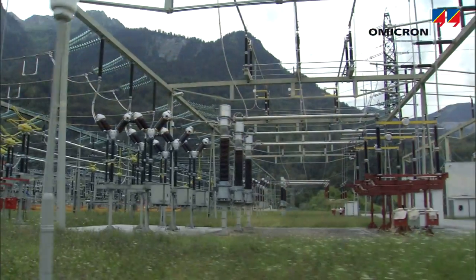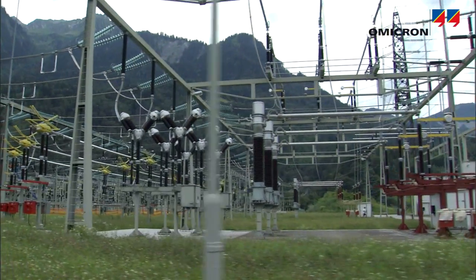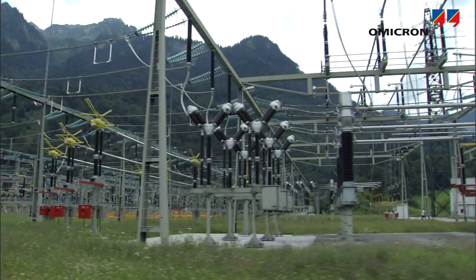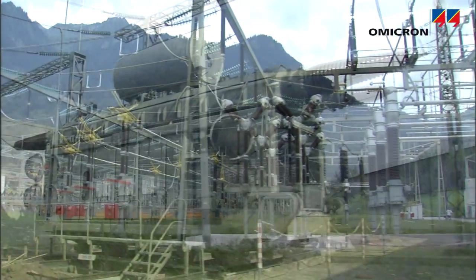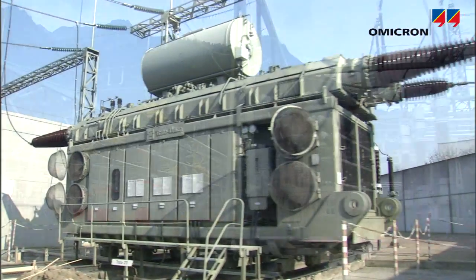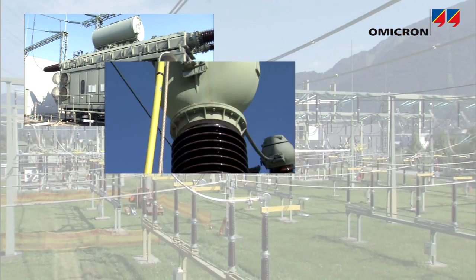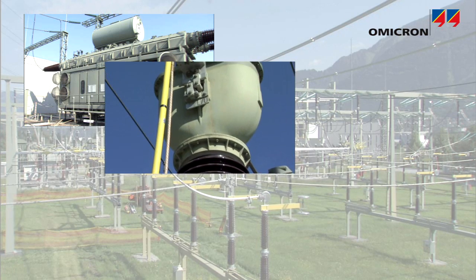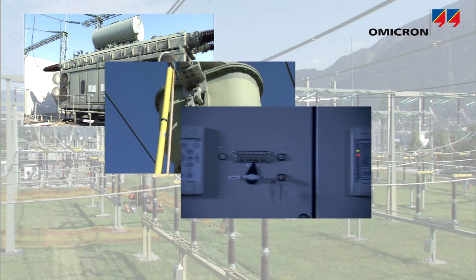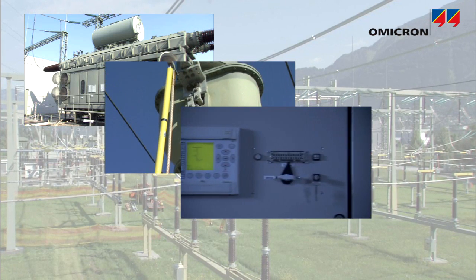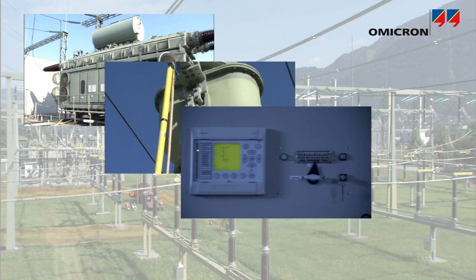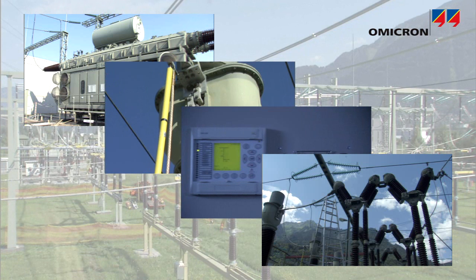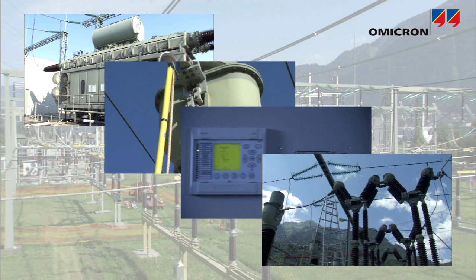Power plants and substations are the major components of the energy system. Aside from power transformers, the main parts of such a plant include instrument transformers, the protection and control system, as well as switching elements like circuit breakers and disconnectors.